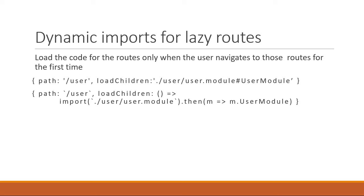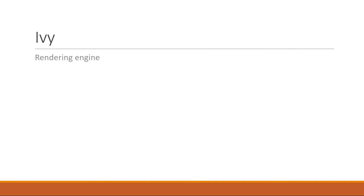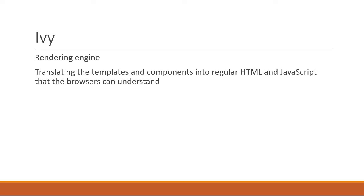The next topic is Ivy. Ivy is the rendering engine that the Angular team is currently working on. It handles translating templates and components into regular HTML and JavaScript that browsers can understand. Ivy is the latest rendering engine and will enable cool features in the future, but even with the release of version 8, it is still not stable. The current focus is to ensure nothing breaks in existing applications.